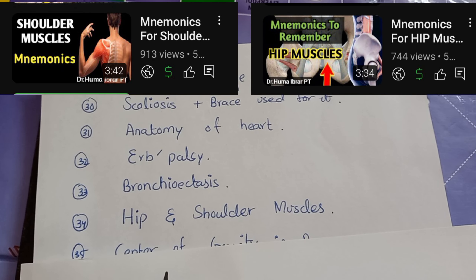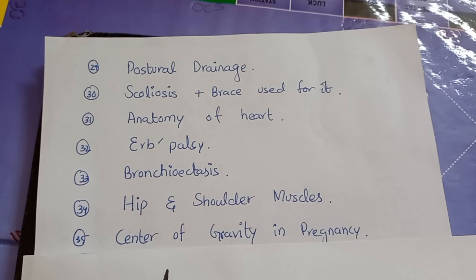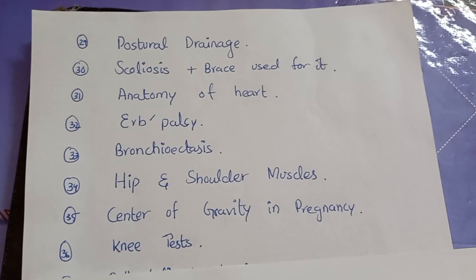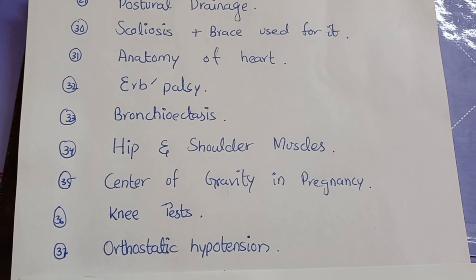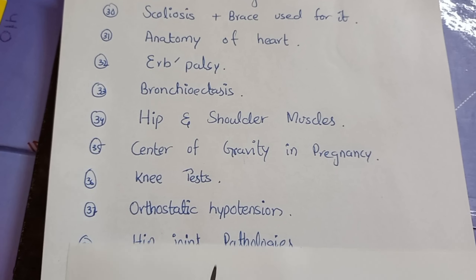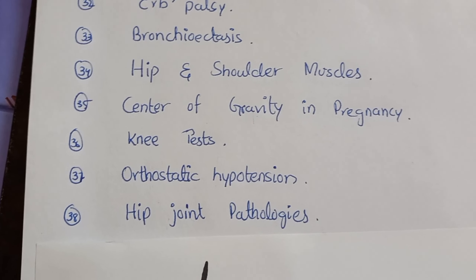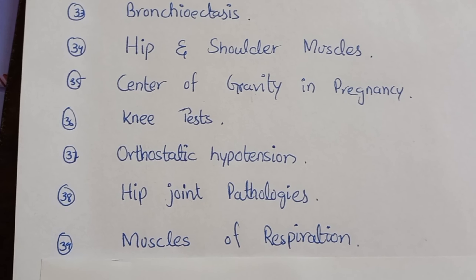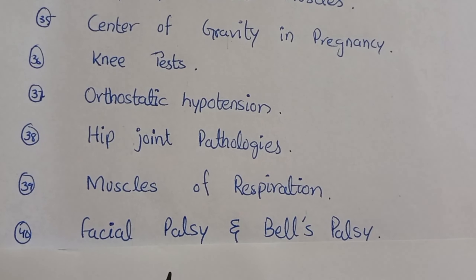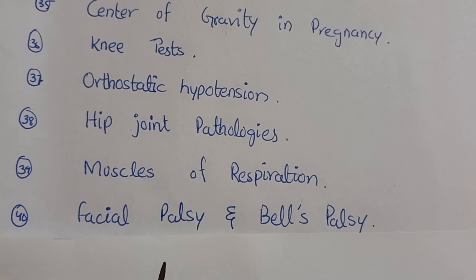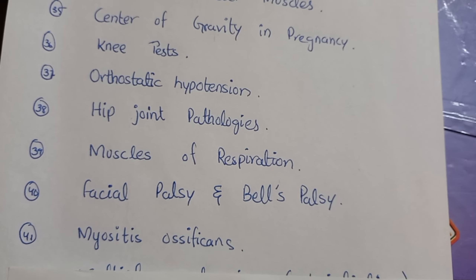Number thirty-five is center of gravity in pregnancy. Number thirty-six is knee tests. Number thirty-seven is orthostatic hypotension — there are also questions about orthostatic hypertension in pregnancy. Number thirty-eight is hip joint pathologies. Number thirty-nine is muscles of respiration. Number forty is about facial palsy and Bell's palsy. Number forty-one is about myositis ossificans.